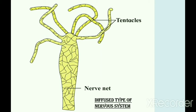In Hydra, activation of sensory cells can happen at any point, and from that point the impulse can be carried throughout the body in any direction, bringing about movement of the body and tentacles — for example, catching of prey. The diffused type of nervous system is the first important landmark of nervous system evolution. It is also seen in ctenophora and in the gut wall of higher animals, including humans.